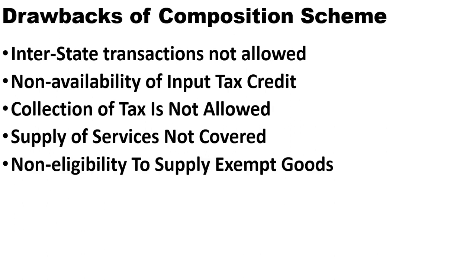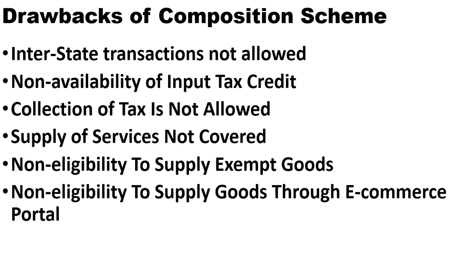Next is non-eligibility to supply exempt goods — composition dealers cannot supply exempt goods. After this is non-eligibility to supply through an e-commerce portal. If you want to start your online business and sell goods through an e-commerce platform, you will not be able to do that if you have opted into the composition scheme. This is also a significant drawback.